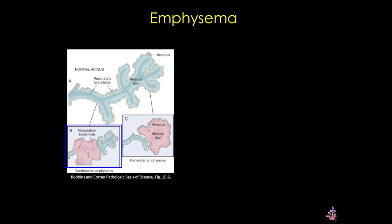Centriacinar emphysema is the most common form, where the central or more proximal parts of the acini, those formed by respiratory bronchioles, are affected. This type occurs predominantly in heavy smokers, often in association with chronic bronchitis. Smoking and inhaled pollutants cause ongoing accumulations of inflammatory cells that release elastases and oxidants, which destroy the alveolar walls, including the elastic tissue that normally holds small airways open. Loss of this tissue causes respiratory bronchioles to collapse during expiration, causing functional airflow obstruction.